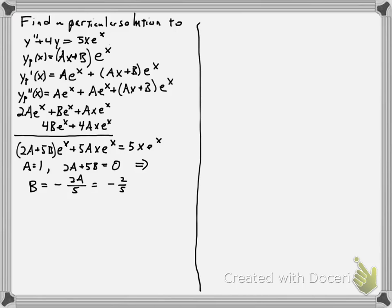So our particular solution in this case is equal to, so we suppose that Ax plus B, so that's going to be x minus 2 fifths and then times e to the x.